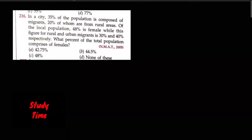Question number 236. In a city, 35% of the population is composed of migrants, 20% of whom are from rural areas. Of the local population, 48% is female, while this figure for rural and urban migrants is 30% and 40% respectively. What percent of the total population comprises females?